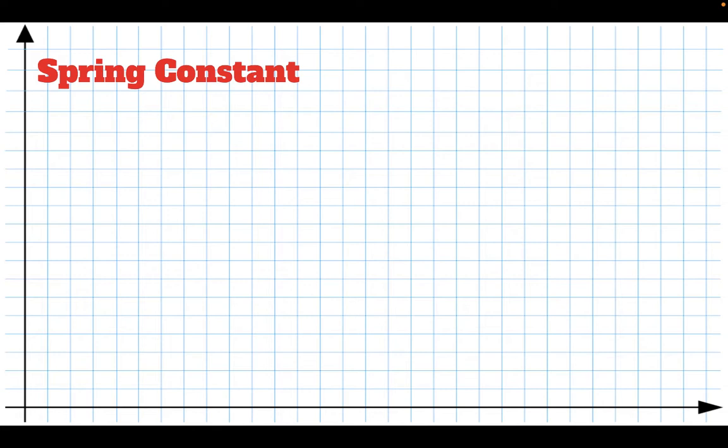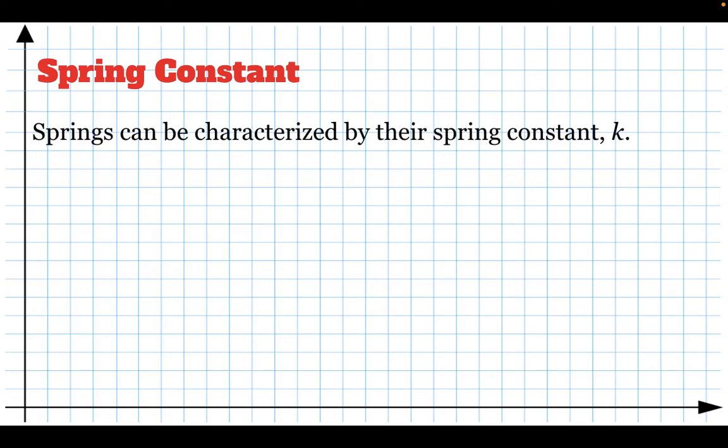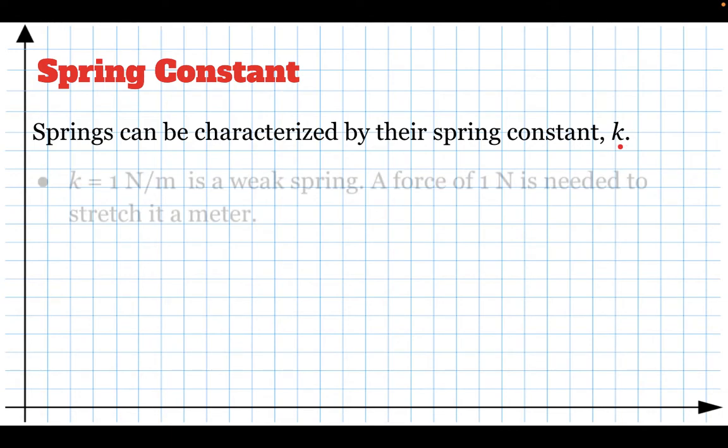So let's talk about springs for a minute. Springs can be stretched, and we characterize them by a constant which we call the spring constant. So the spring constant is this thing we represent by k, and it tells us how strong or how stiff a spring is. For example, if the spring constant is one newton per meter, that's a very weak spring. It means a force of one newton will stretch it a whole meter.